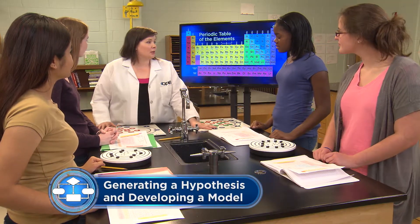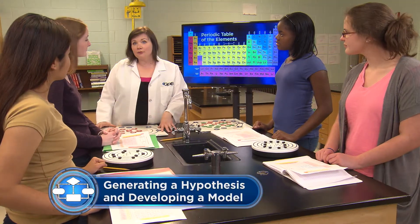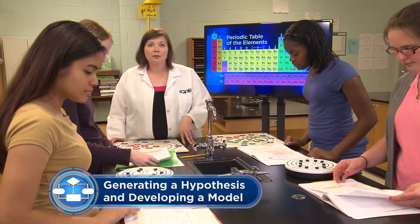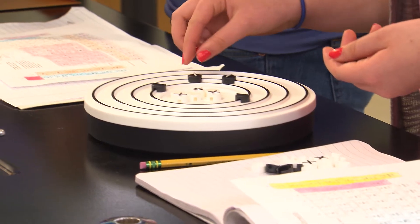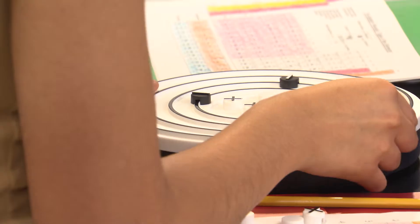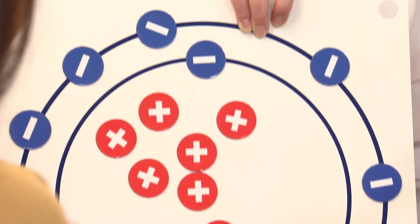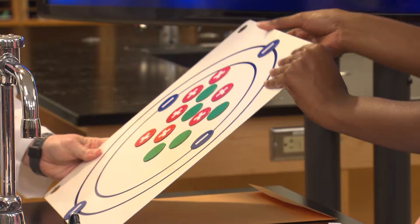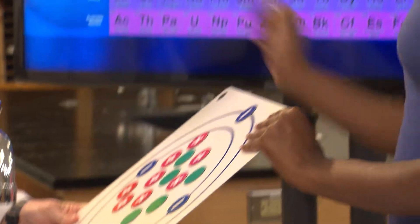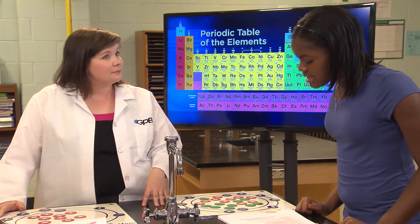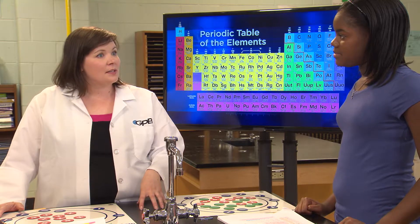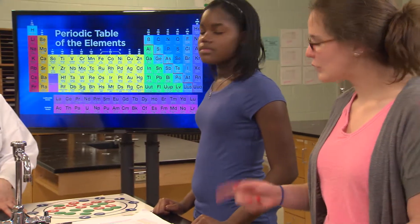Very good. Use your model kits to create a Bohr model of neon, and you guys use your kits to create a model of fluorine. Start by looking at your periodic table to determine the number of protons, and that will be the same as the number of electrons. Now that you have your models built, how many electrons does neon need? Neon has 10 electrons because its atomic number is 10. And how many of those electrons go in the first energy level of neon? Only two. How many electrons will go in the first energy level of fluorine? Fluorine also has two electrons in the first energy level.